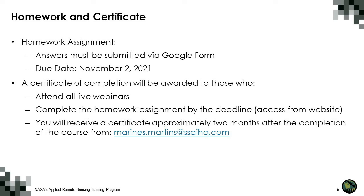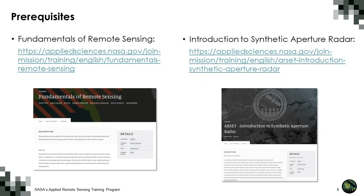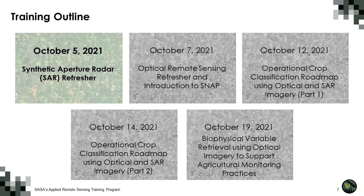A certificate of completion will be awarded to those who attend all sessions and complete the homework by the deadline. Expect to receive the certificate around two months after completion of the course from Mariness Martens. The prerequisites for this training are the fundamentals of remote sensing and introduction to synthetic aperture radar — links are on the slide. Today we will provide a refresher on synthetic aperture radar, and on Thursday, October 7th, a refresher on optical remote sensing as well as an introduction to the SNAP software.